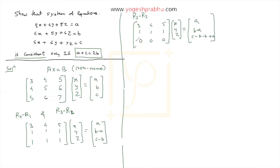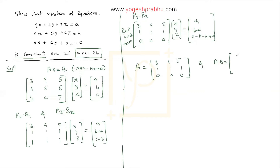This is now the row echelon form. From the row echelon form, matrix A in reduced form has rows [3, 4, 5], [1, 1, 1], and [0, 0, 0]. The augmented matrix [A|b] is: [3, 4, 5 | a], [1, 1, 1 | b−a], [0, 0, 0 | a + c − 2b].